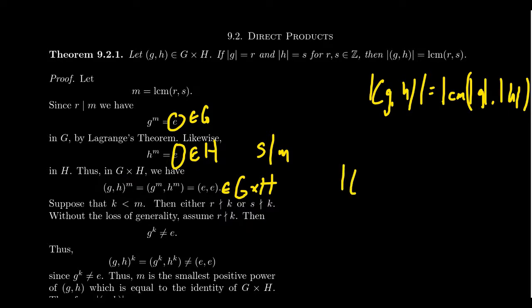Now, let's say that the order of (g,h), it's some integer, of course. Let's say it's equal to k for a moment. Then we know that k is going to divide m. Which these are both positive integers. So one of two things are going to happen here. Either k is equal to m, which is what we're trying to show, or k is actually less than m. So let's consider that situation for a moment. What if k is strictly less than m? Well, since k is less than m, and m was the least common multiple of r and s, that means that either r doesn't divide k or s doesn't divide k. And so without the loss of generality, let's assume that r doesn't divide k.